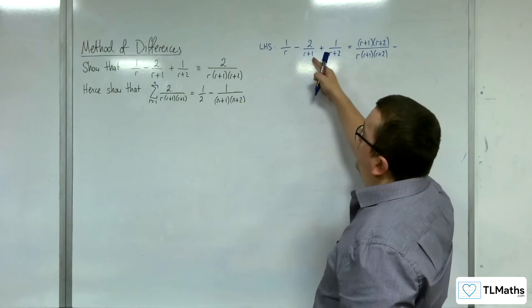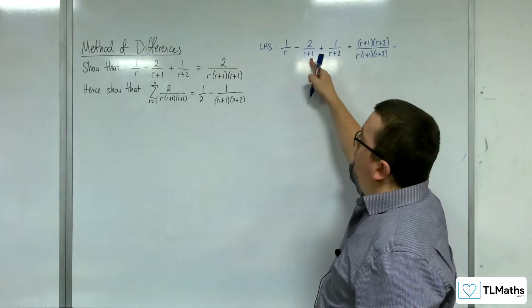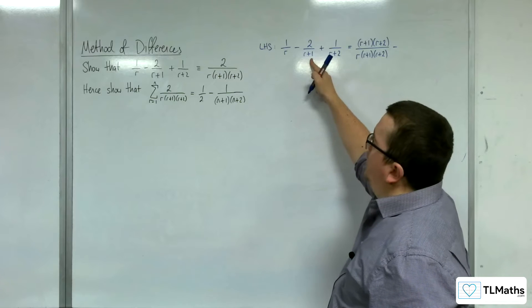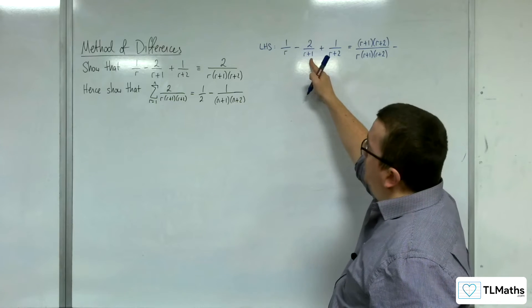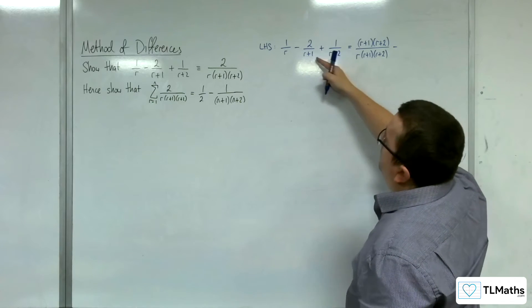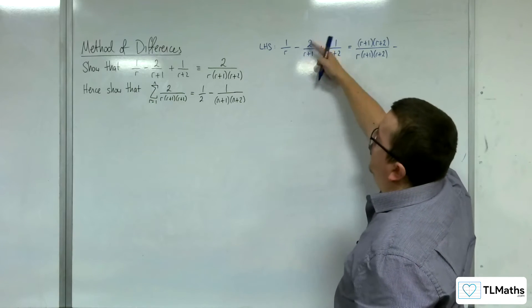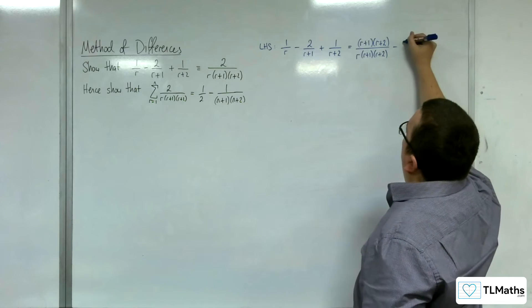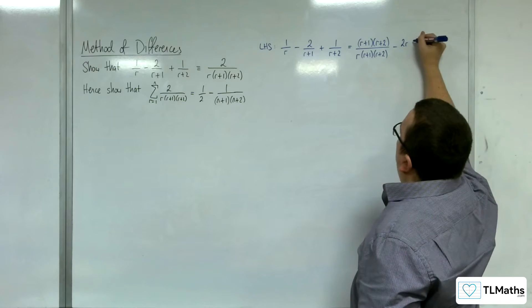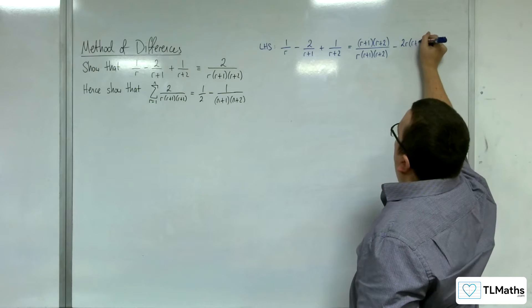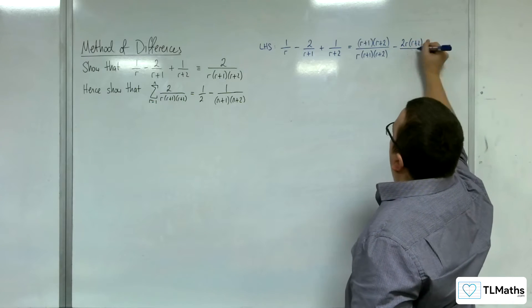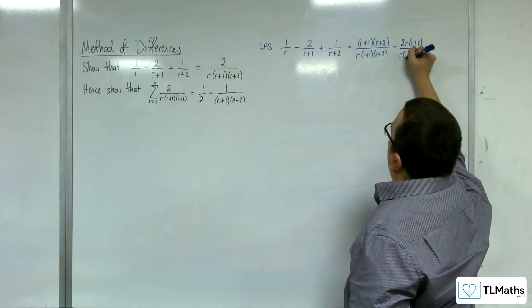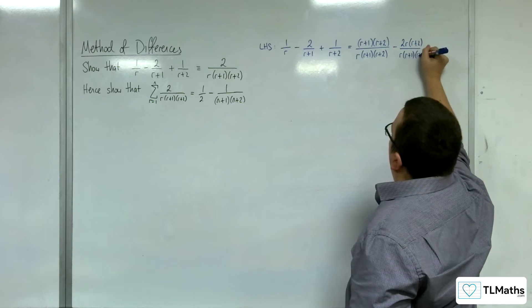The second term has r plus 1 already in the denominator, but it doesn't have r and it doesn't have (r+2). So, we've got to multiply that one top and bottom by r(r+2). So, two lots of r(r+2) over r(r+1)(r+2).